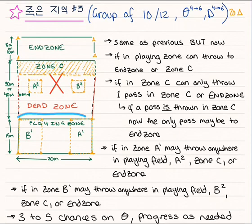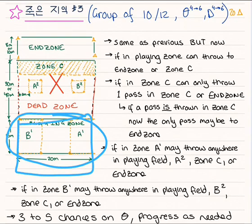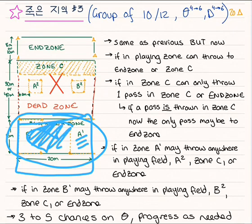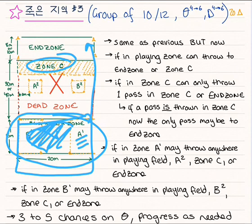So instead, if this is your playing field proper — and this could be whatever size you want — if a player is in space A, they can of course play it to anyone within that area, or to the end zone, which we definitely want. You also have zone C as another option. However, there is a third option, which is this cross-pitch throw into the space on the other side.